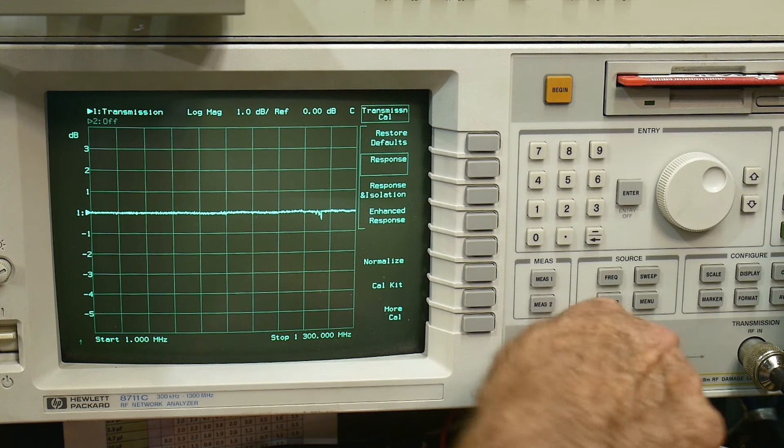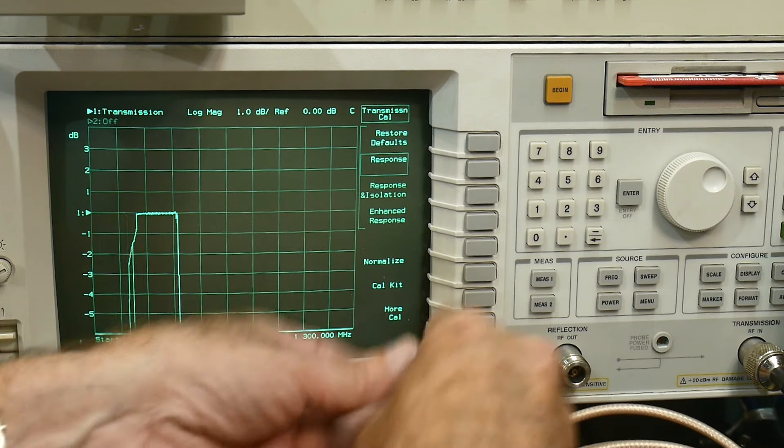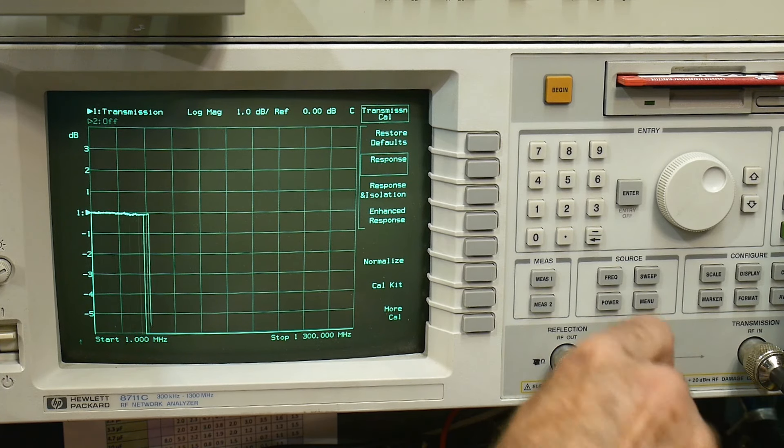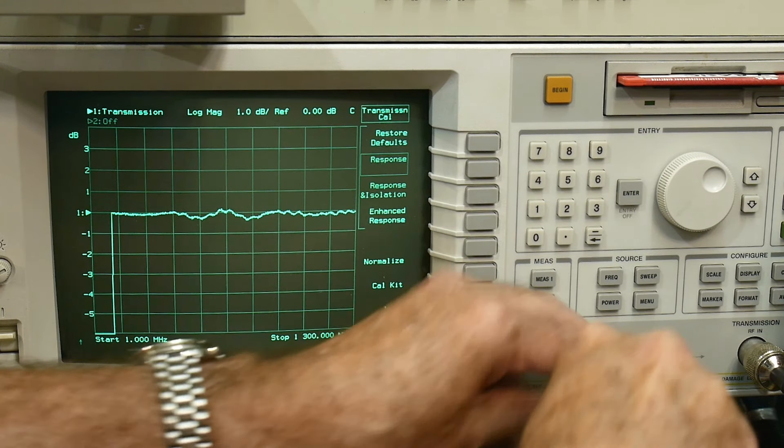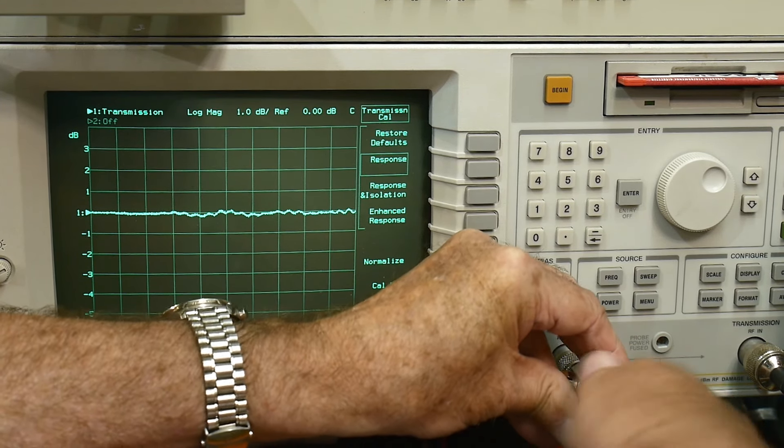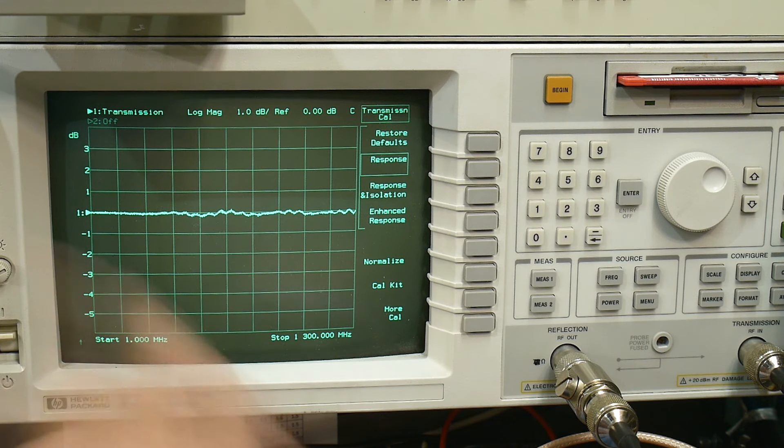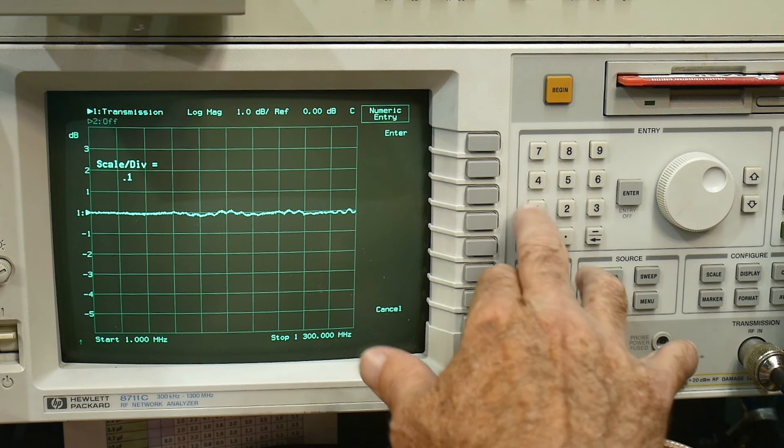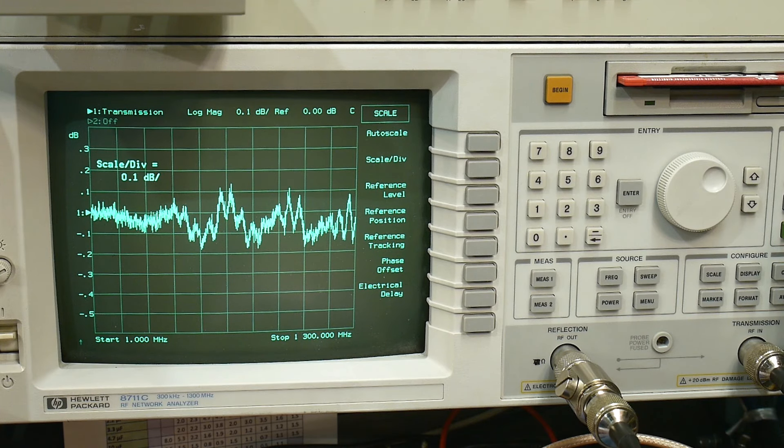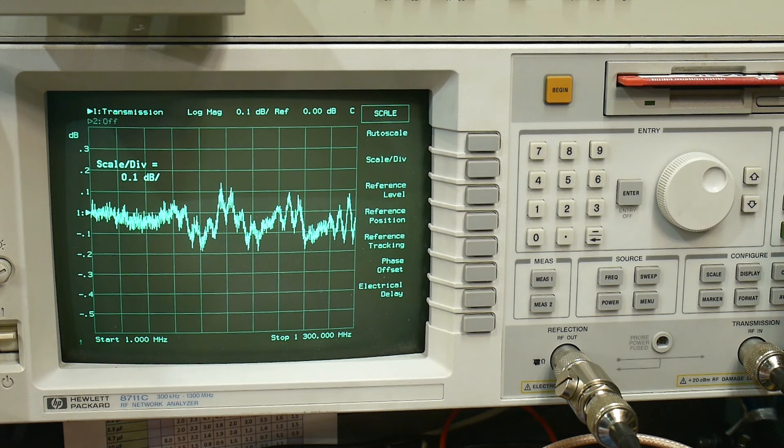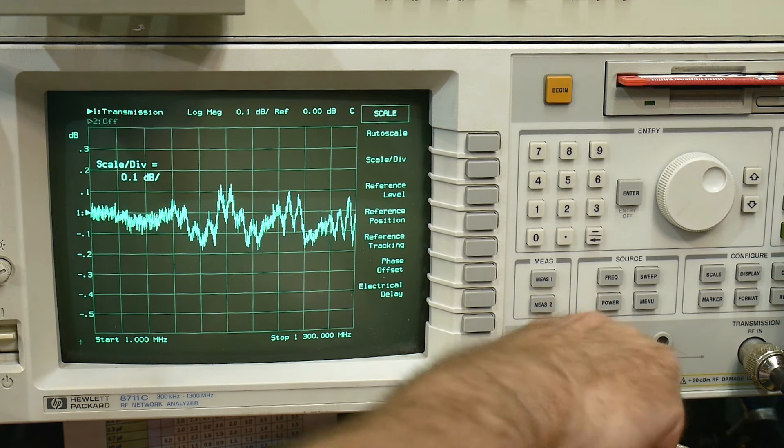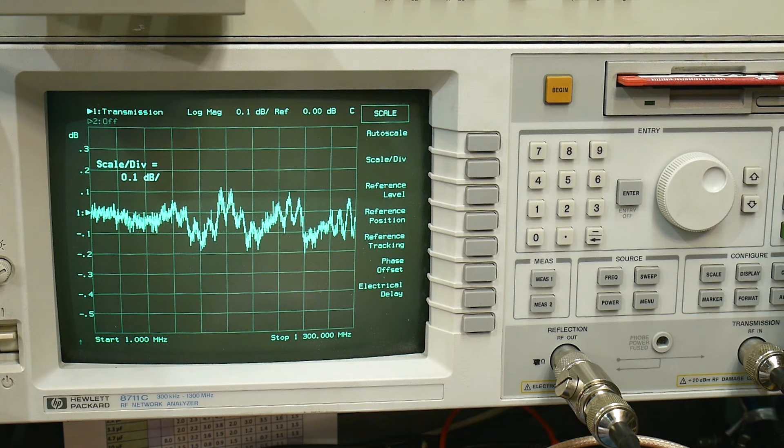So we're going to insert our surge protector and take a look at what it does. So there you go. Lock down our N connector nice and tight. And you can see that it's very, very small amount of ripple, scale 0.1. So it's less than 0.1 dB whacking up and down, just reflections in there and stuff. So don't worry about it. It's not going to harm having one of these in there.